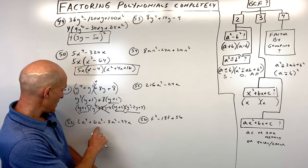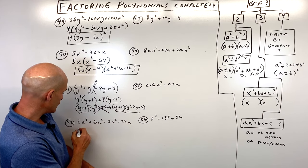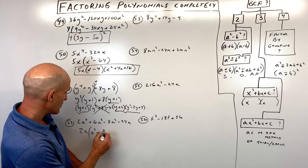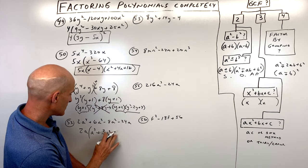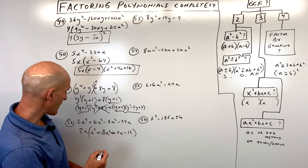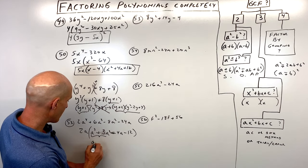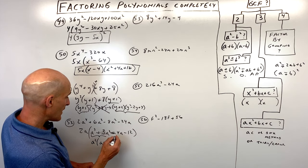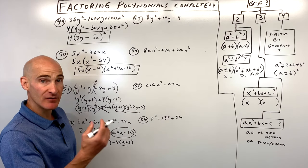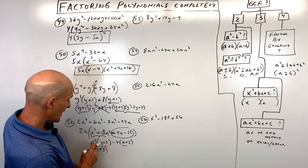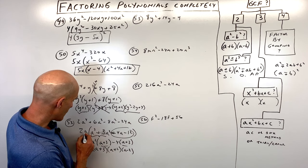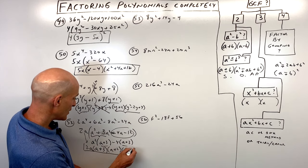Number fifty-two has four terms with a greatest common factor of 2a. Factoring that out gives 2a times a cubed plus 3a squared minus 4a minus 12. Now use factoring by grouping on the four terms: factor out a squared to get a plus 3, then factor out negative 4 to also get a plus 3. Factor out a plus 3, leaving a squared minus 4 — but that's a difference of two squares, so factor as a plus 2 times a minus 2. Don't forget the 2a from the initial step.